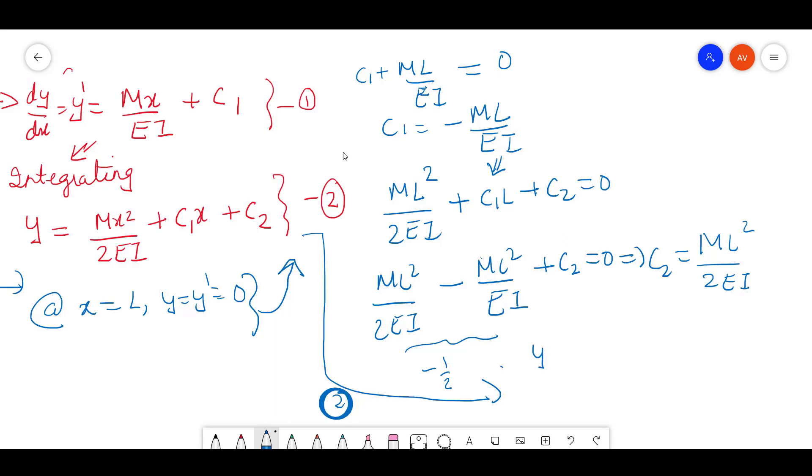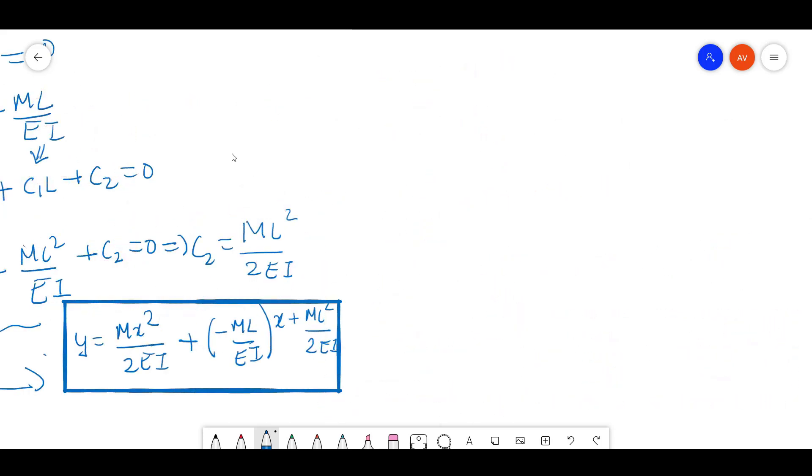Now utilizing this, from equation 2, y equals Mx²/2EI plus C1, which is minus MLx/EI plus ML²/2EI. So this is your final equation.